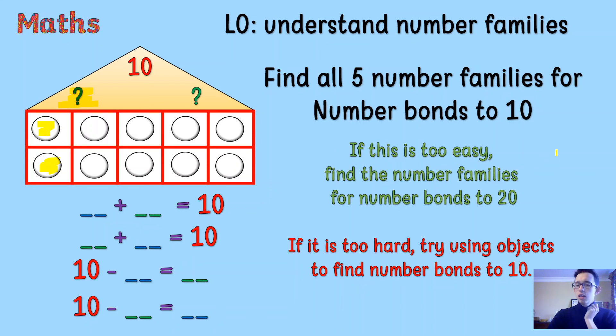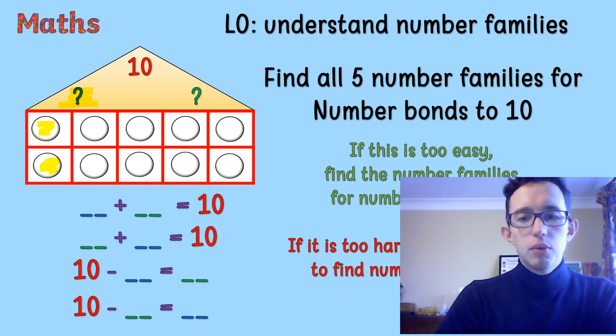So if it's too easy, try to do it with your number bonds to 20. And if it's too hard, just try using objects to find your number bonds to 10. You could use pens, maybe, or whatever you have lying around, or toys, just to find your number bonds to 10. And then just write those down, rather than trying to find all the different ways to show it. But what I really want you to show me is the five number bond families to 10. But just get as far as you can if it's a bit tricky. Just do some of the ones. We've done one together, so you can always rewind the video, and that will show you.